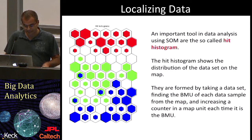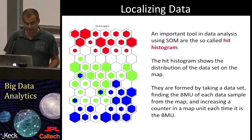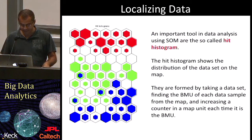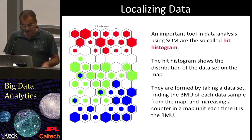An important tool in data analysis using self-organizing maps are the so-called heat histograms, which show the distribution of the dataset on the map. They are formed by taking a dataset, finding the best matching unit of each data sample, and incrementing a counter in a map unit each time that unit is the BMU of one of the input samples. It's also a very useful and easy way to visualize how the gold standard spreads on the map, for example using colors to encode classes. In this example there are three classes, and you can see that the red one is well separated from the other two, which have some overlap. This is the distribution of the IRIS dataset, where one class is linearly separable from the other two. IRIS is often used as a benchmark.